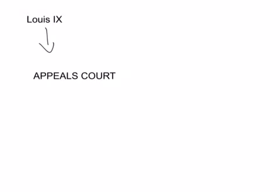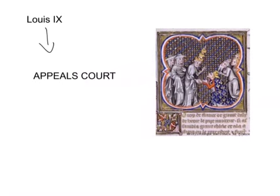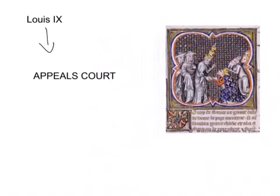The next important king in the Capetian dynasty is Louis IX. He implemented something called the appeals court — courts set up by the king which could overturn decisions made by local courts. For example, if a local judge made a decision and the person prosecuted felt it was unfair or that more evidence needed to be considered, they could go to the appeals court and ask the king's officials to reconsider. This gave the king more power over the lords controlling local courts and was another step that broke down the feudal system.